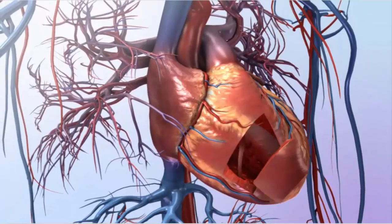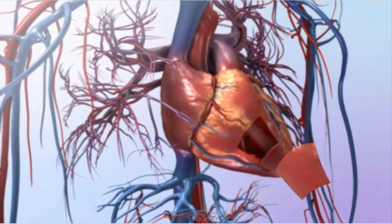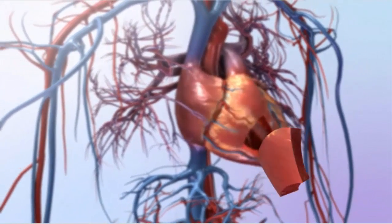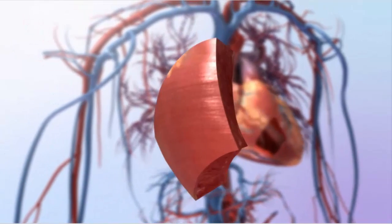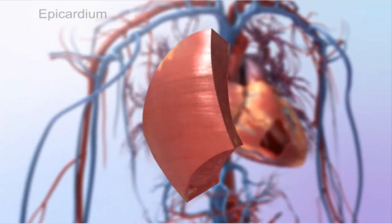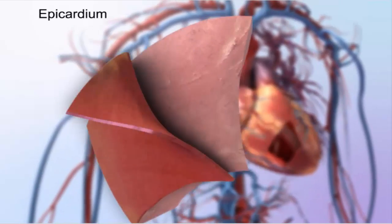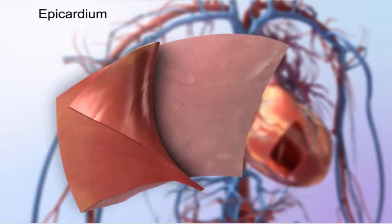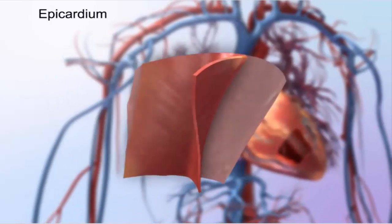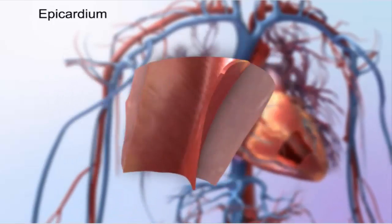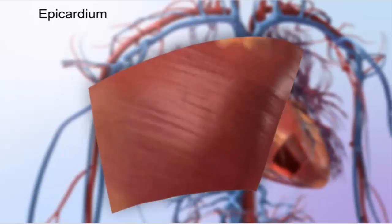Cardiac muscle, which is found only in the heart wall, contracts constantly to pump blood throughout the body. The heart wall is composed of three layers. A thin layer called the epicardium, or visceral pericardium, forms the outermost part of the heart wall. This layer adheres the heart to the pericardium, a sack of tissue that protects the heart from friction as it beats.